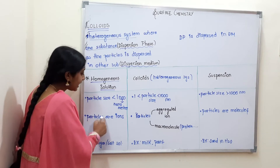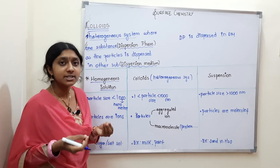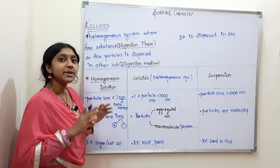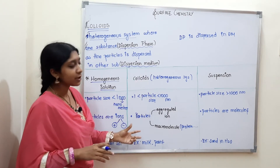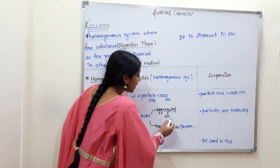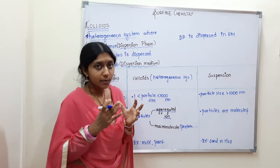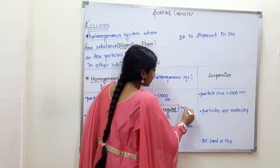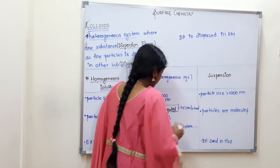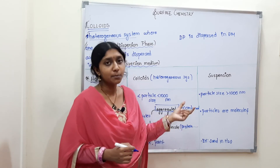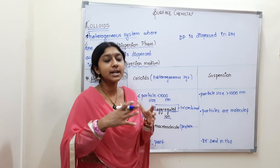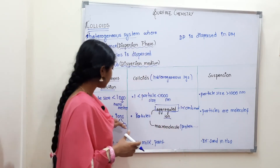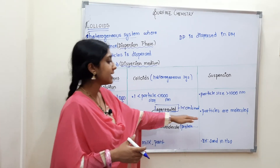The second difference is the nature of particles. In a homogeneous solution, particles are ions — either positively charged or negatively charged. Colloids can have two forms: aggregated ions, meaning many ions combined into a particular molecule, or macromolecules such as proteins and polymers, which are large-sized molecules. So the particles can be ions, macromolecules, aggregated ions, or molecules.